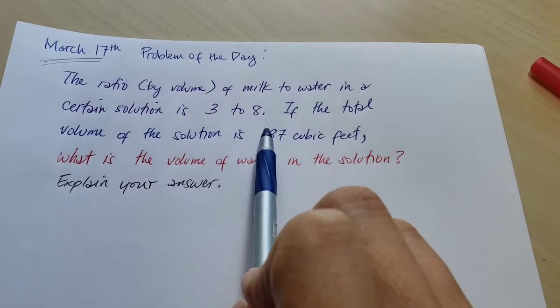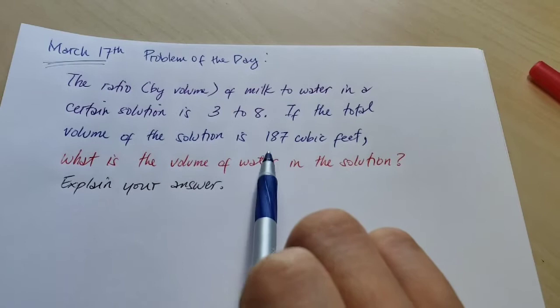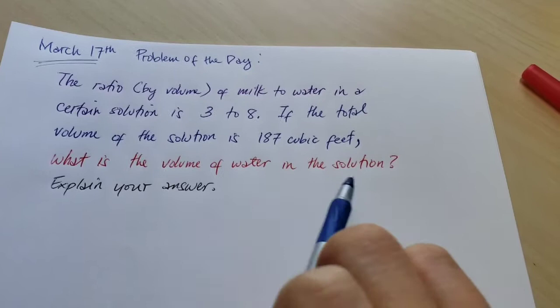in a certain solution is 3 to 8. If the total volume of the solution is 187 cubic feet, what is the volume of water in the solution? Explain your answer.